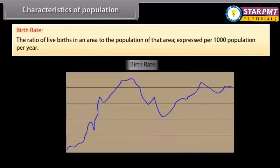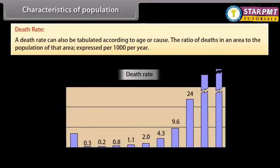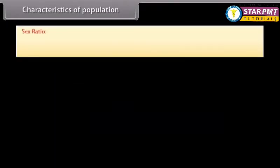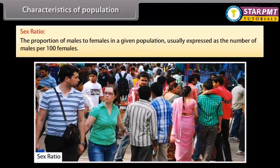Birth rate is the ratio of live births in an area to the population of that area, expressed per 1,000 population per year. Death rate is the ratio of deaths in an area to the population of that area, expressed per 1,000 per year. Sex ratio is the proportion of males to females in a given population, usually expressed as the number of males per 100 females.